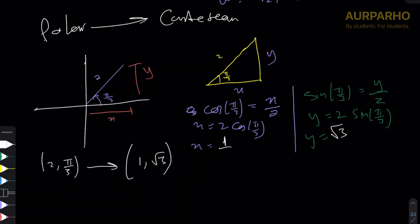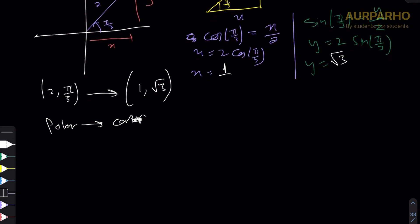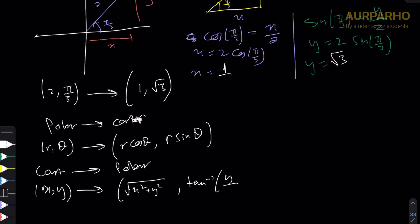In general, for polar to Cartesian: given (r, θ), we have x = r cos θ and y = r sin θ. For Cartesian to polar: given (x, y), we have r = √(x² + y²) and θ = arctan(y/x).